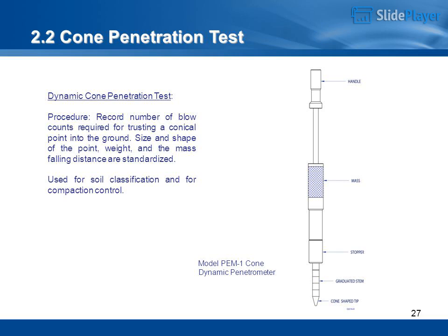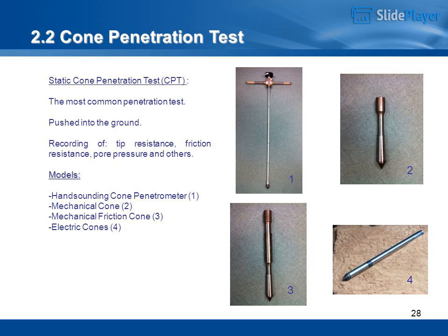Static Cone Penetration Test (CPT) — the most common penetration test. The probe is pushed into the ground and records tip resistance, friction resistance, pore pressure, and other parameters. Models include: hand sounding cone penetrometer, mechanical cone, mechanical friction cone, and electric cones.